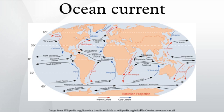Perhaps the most striking example is the Gulf Stream, which makes Northwest Europe much more temperate than any other region at the same latitude. Another example is Lima, Peru, where the climate is cooler than the tropical latitudes in which the area is located, due to the effect of the Humboldt Current.